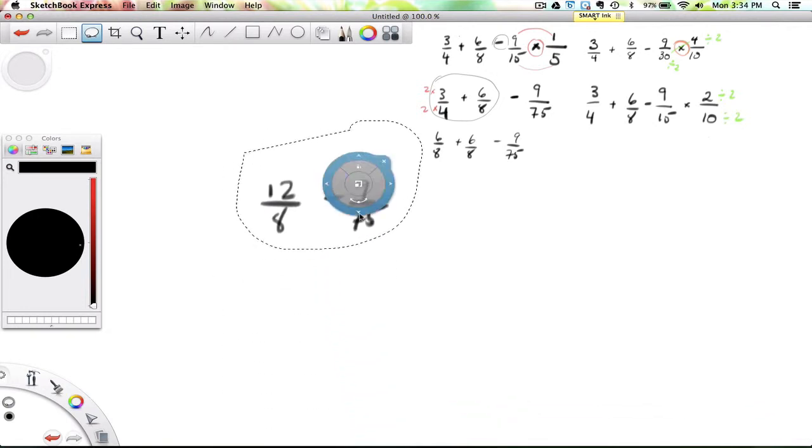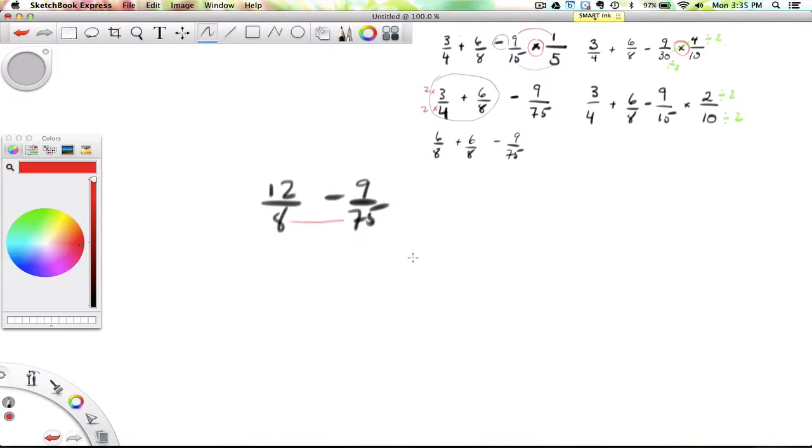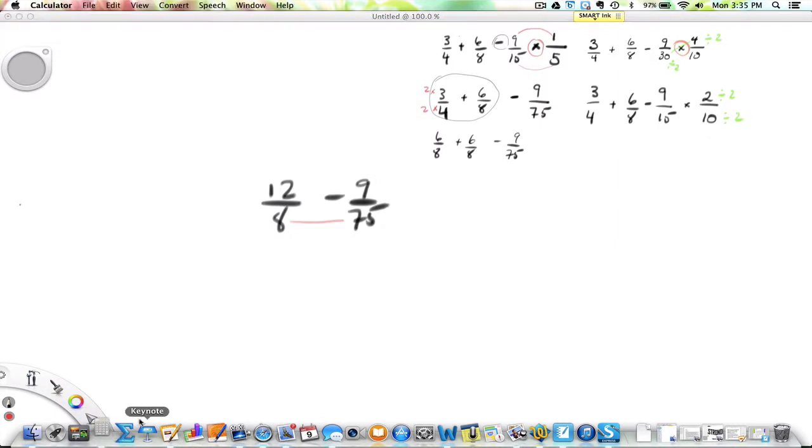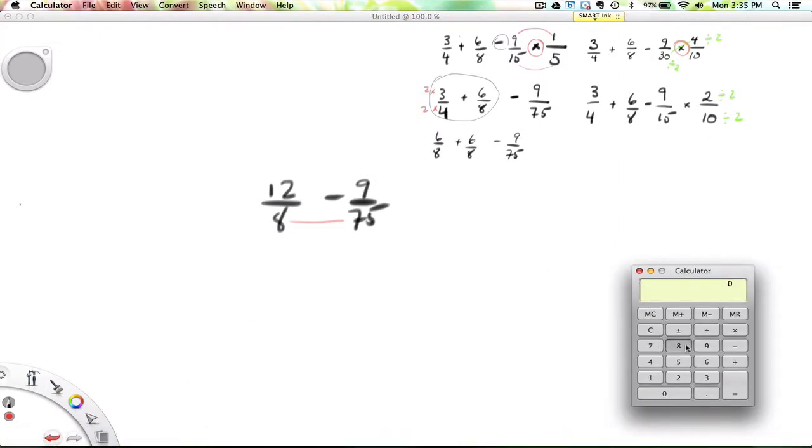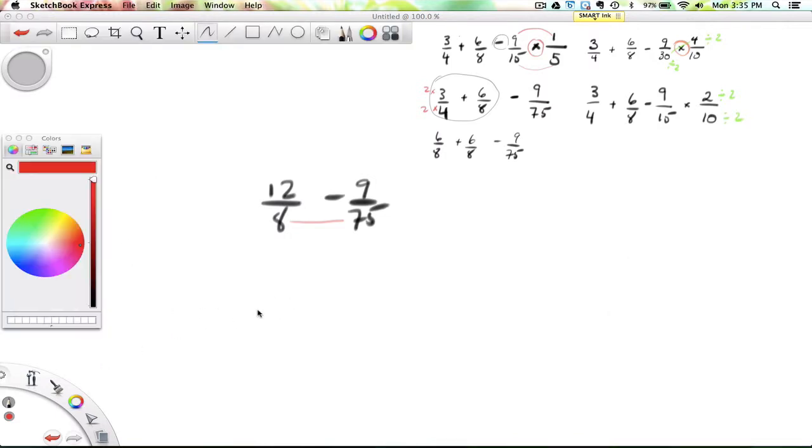And now we're focusing on this. So the idea here is to get a common denominator between 8 and 75. I can do a table of multiples to find the lowest common multiple, or to save time, I can just multiply the 8 and the 75 together, which automatically gives a common denominator. Not necessarily the lowest, but a common denominator. I'm going to do 8 times 75, which gives 600. So I'm going to make the denominator 600.